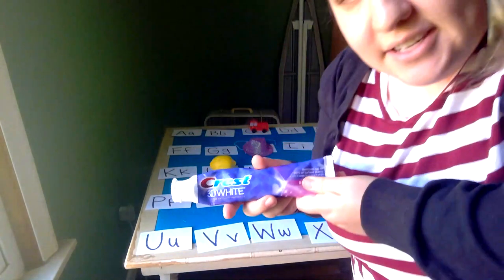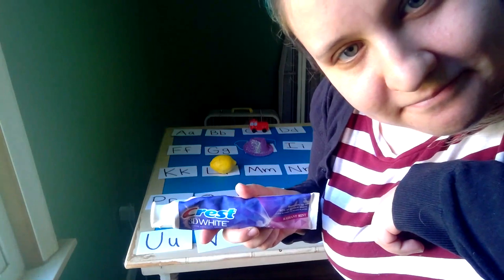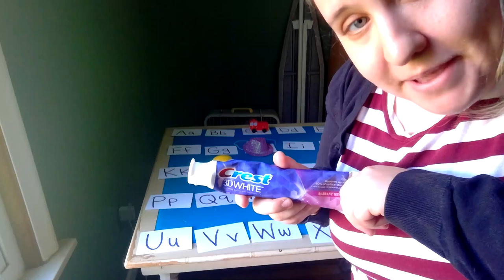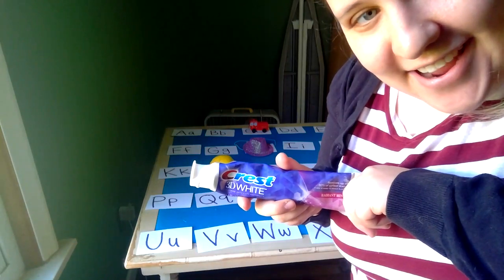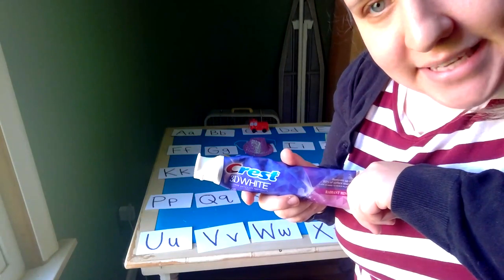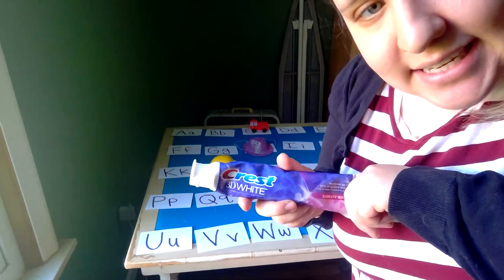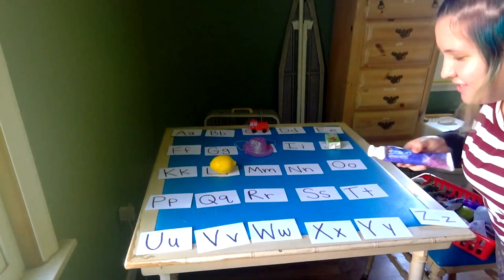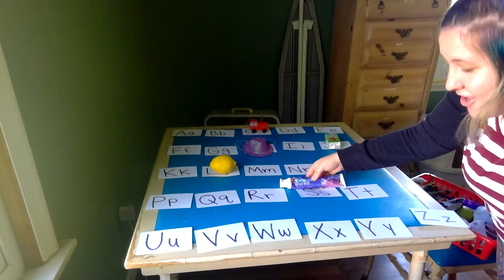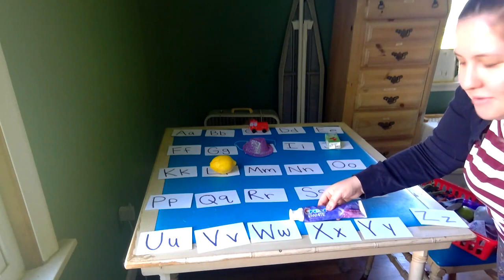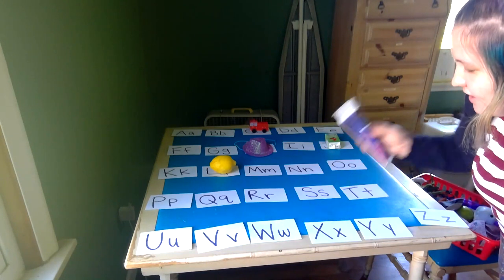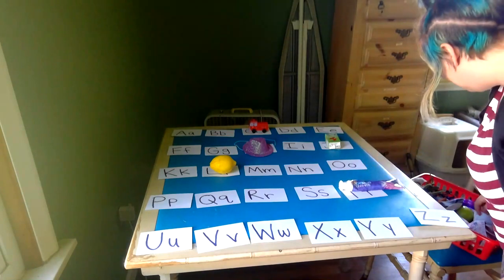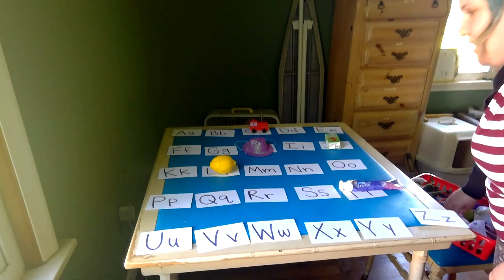What's this? I found this in my bathroom. It's toothpaste. What sound does T-T-toothpaste start with? That's right, a T sound. So what letter makes a T sound? T-T-toothpaste — that's right, letter T. Where's our letter T? Oh my goodness, can I trick you guys? That's right, letter T. T-T-toothpaste. Next we have a paintbrush. What sound does a paintbrush start with? Puh, puh — paintbrush starts with puh. What letter makes a puh sound? That's right, letter P. I'm going to put my paintbrush there.